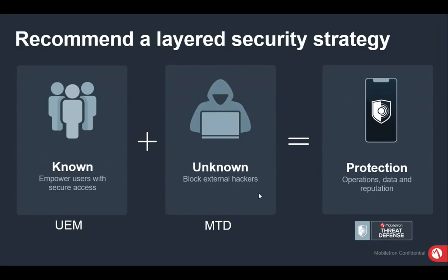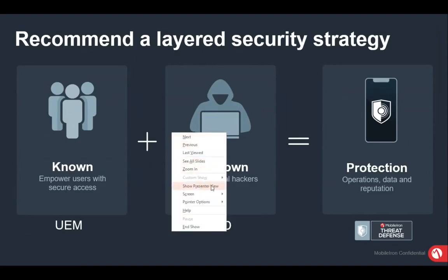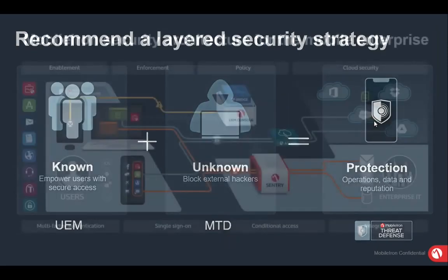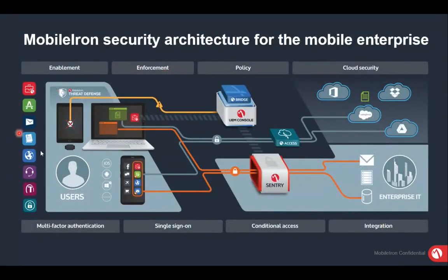With MobileIron, we ensure that whoever is using EVM and EMTD is secure enough to access backend resources. EVM is used for managing device posture, policies, and configuration. EMTD is for blocking external hackers. Together, they provide Mobile Threat Defense. This is the high-level architecture for EUM — we have an EUM console which can be on-prem or cloud, and we have Sentry.